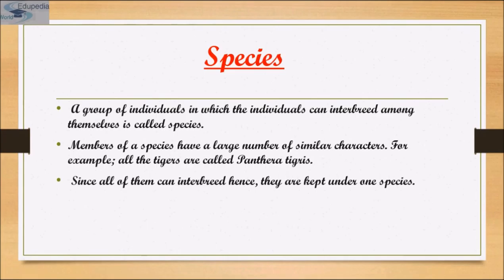First is species. Taxonomic studies consider a group of individual organisms with fundamental similarities as a species. One should be able to distinguish one species from another based on distinct morphological differences. For example, Mangifera indica is mango, Solanum tuberosum is potato, and Panthera leo is lion. The names indica, tuberosum and leo represent specific epithets, while Mangifera, Solanum and Panthera are genera representing a higher level of taxon.